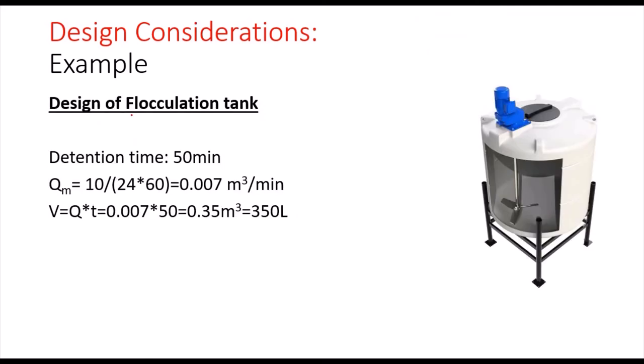Now concerning the design of the flocculation tank, we have chosen a detention time of 50 minutes. We will convert the flow from cubic meters per day into cubic meters per minute to be consistent. So it will be 10 divided by 24 times 60, and we will get 0.007 cubic meters per minute. Concerning the volume of the coagulation tank, it will be V equals Q times t, 0.007 times 50, which is 0.35 cubic meters or 350 liters.